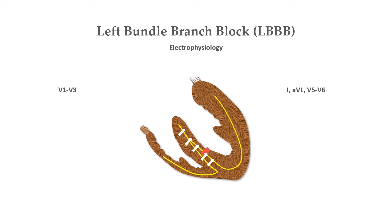Since conduction via left bundle branch is blocked, the depolarization of left ventricle now occurs from the right ventricle. Because this conduction occurs via myocytes instead of conduction tissue, it is much slower. This results in the formation of an overall depolarization vector directed from right to left, which produces taller waves in lateral leads — lead 1, V5, V6 — and deep S waves in the right precordial leads V1 to V3. And due to slow conduction, QRS complex is wider than normal, with duration greater than 120 ms, that is more than three small squares.